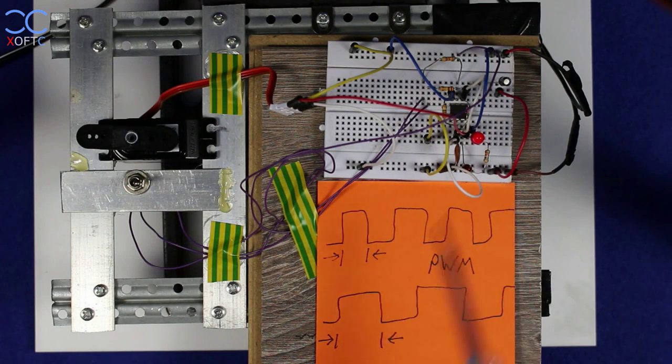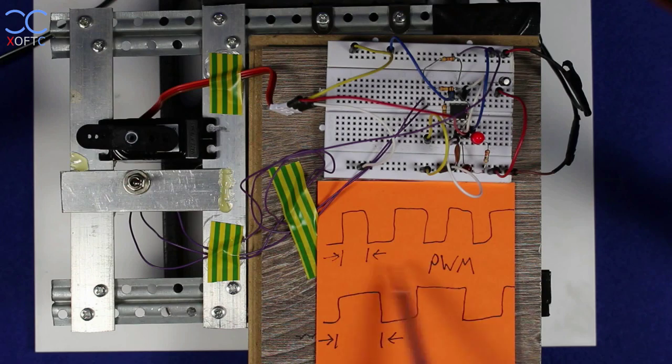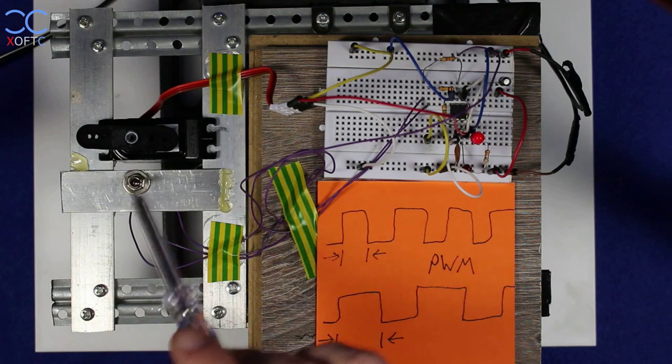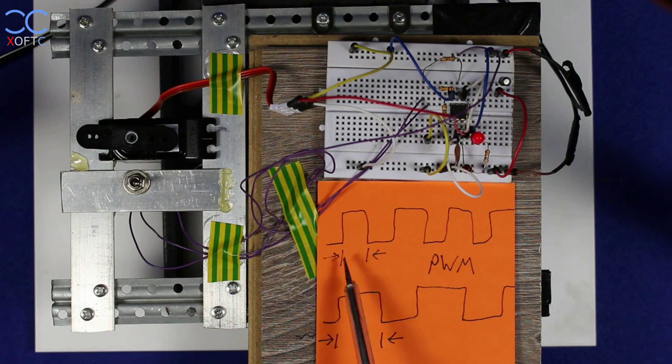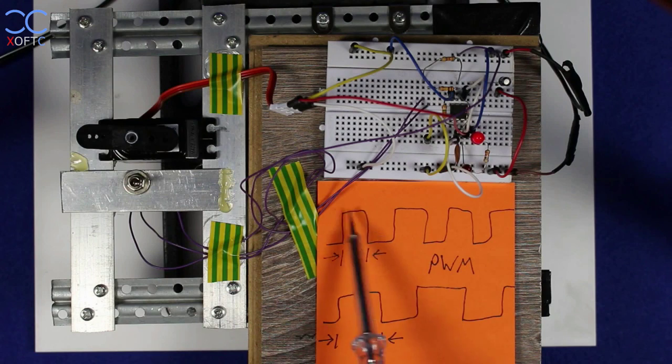If you don't know how servo motors work, basically they receive a pulse signal from something that generates pulses. According to the width of the pulse, that will dictate how the servo will turn, where it will turn to. You can see an example here.